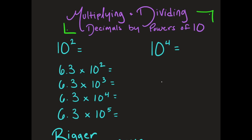Right here we have 10 squared, or 10 to the power of 2. If we were to write it out, that's 10 times 10, which equals 100. You'll notice the amount of zeros is also the number of the exponent.